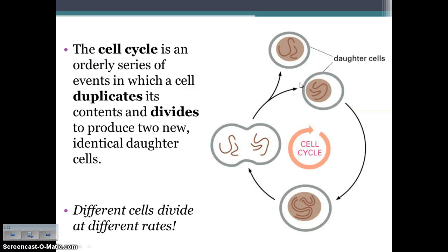The cell cycle is an orderly series of steps in which a cell duplicates its contents — it doubles what it has inside — and then divides, so that what you end up with is two new cells that are identical to each other and, more importantly, identical to the original cell. We want to make sure that the two new cells have everything they're supposed to have, so the cell duplicates its contents and then divides to create two new identical daughter cells.